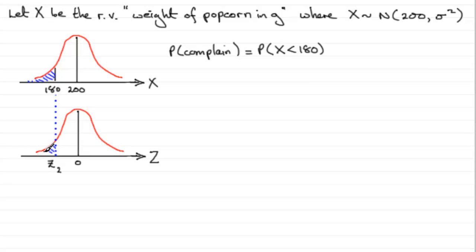So that's going to be given by that area to the left of Z2. Now to work out Z2, we just need to do the observed value, which is 180 minus the mean, 200, all divided by the standard deviation. We saw that the standard deviation in the first part was 11.8821, in my case anyway. Do use the unrounded version so you don't get any rounding errors.